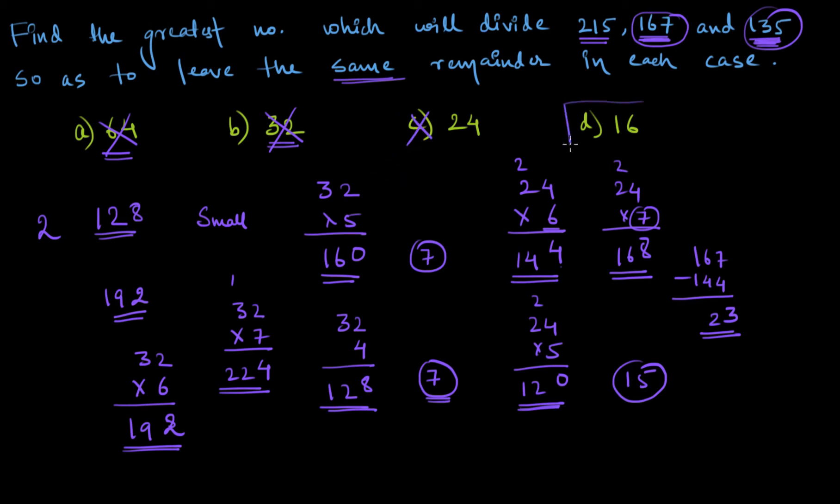Either now you can check for 16 because there is no option of none of these. So D will be my answer. Or if you want to be completely sure, you can check for the remainders left in case of all three numbers when they are divided by 16. And I am sure you'll get the same remainder in each possible case. If you were lucky, you can directly start with 16 instead of starting with 64. We could have started with 16. In that case, we would have been to our answer like much earlier. But in any case, I just want you to know that in some cases, in some questions, options play a crucial role in determining your right answer.